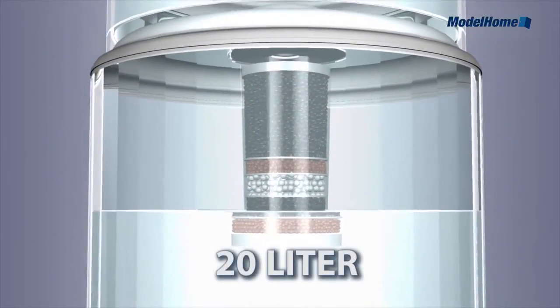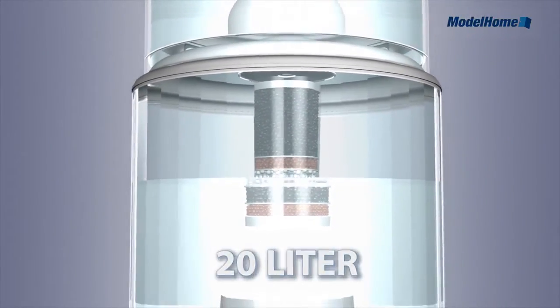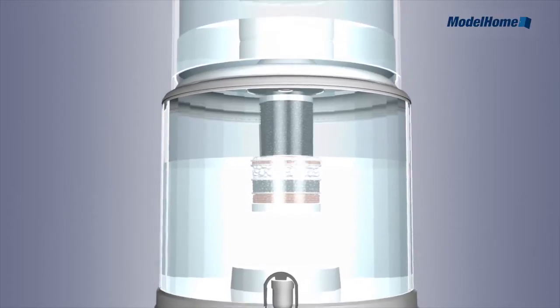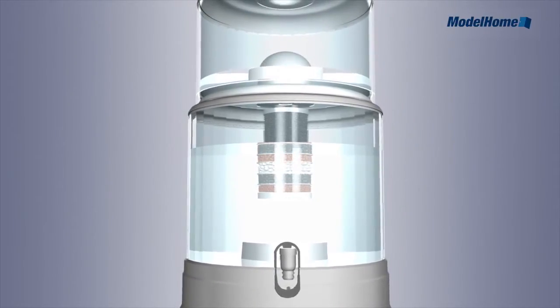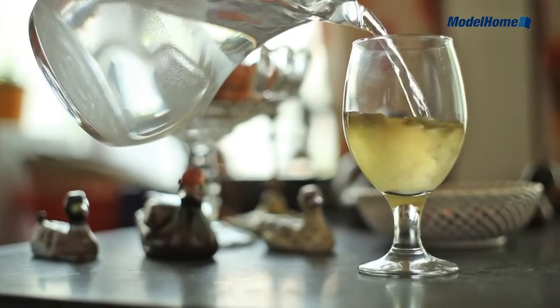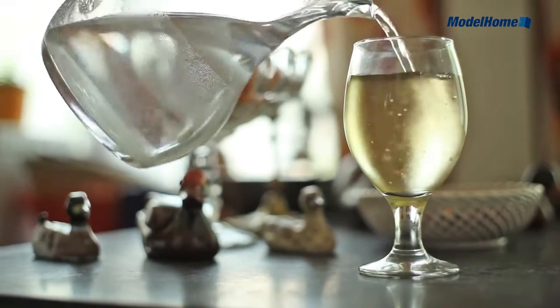The total capacity of the water filter is 20 liters. Tap water simply has to be poured directly into the top container. The water doesn't have to be prepared in any way. Just allow the liquid to drip to the bottom.